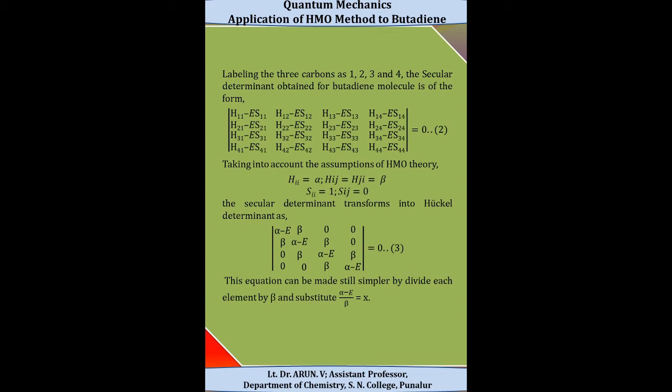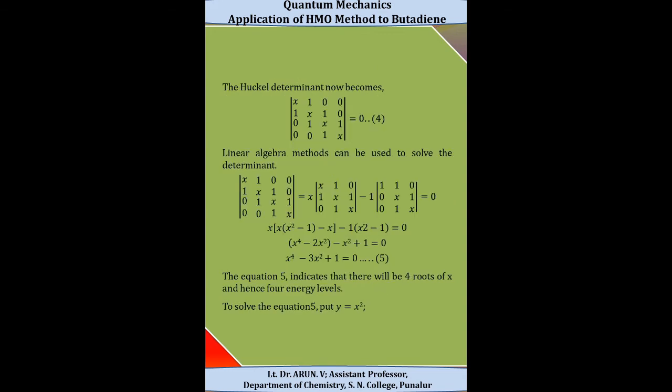By applying these assumptions, the secular determinant transforms into the Hückel determinant: (alpha − E), beta, 0, 0 / beta, (alpha − E), beta, 0 / 0, beta, (alpha − E), beta / 0, 0, beta, (alpha − E) = 0. This equation is simplified by dividing each element by beta and substituting x = (alpha − E) / beta. The Hückel determinant then becomes: x, 1, 0, 0 / 1, x, 1, 0 / 0, 1, x, 1 / 0, 0, 1, x = 0.